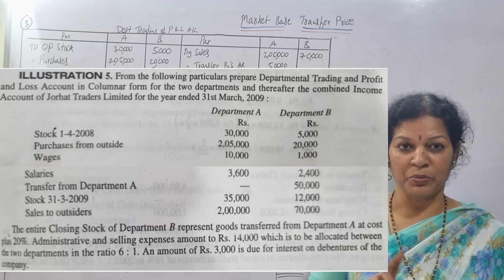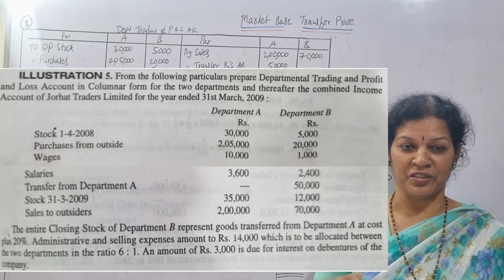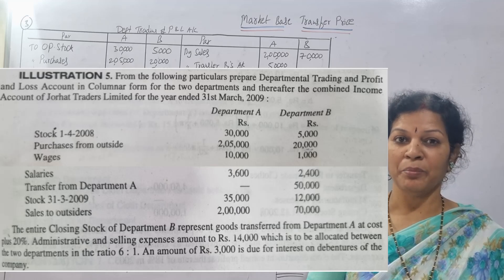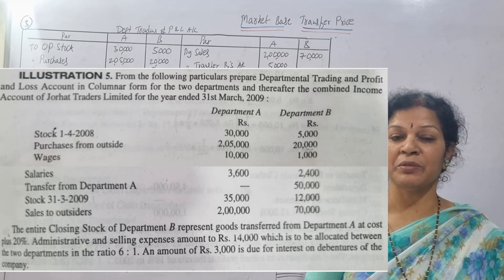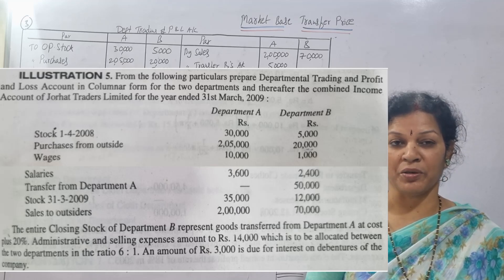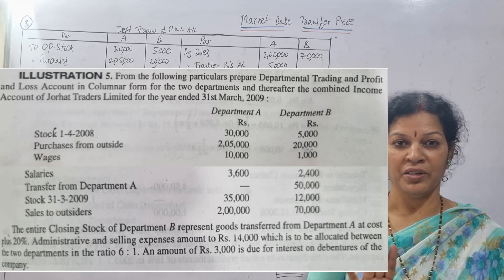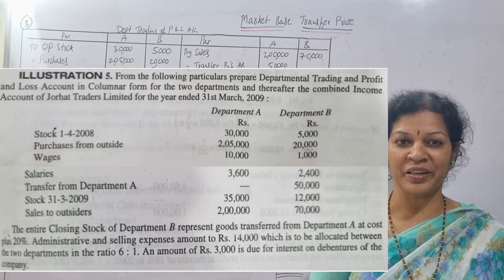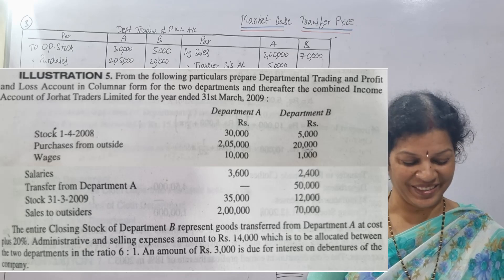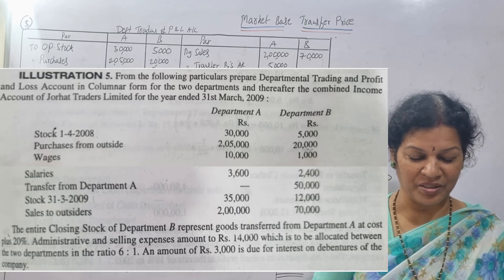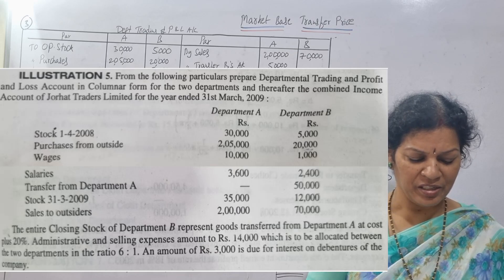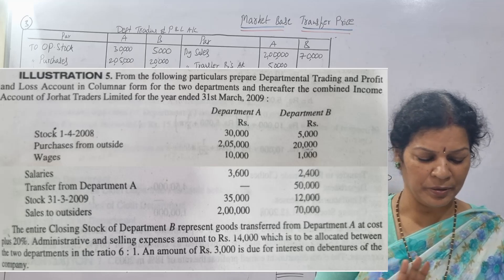Transfer means both sides will be written — debit side and credit side. Transfer from Department A means B is receiving, so B's account is debited and A's account is credited. This posting goes into the trading account. Next, closing stock goes on the trading account credit side. Sales to the outsider also go on the trading account credit side.